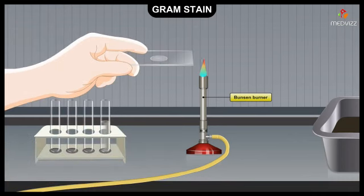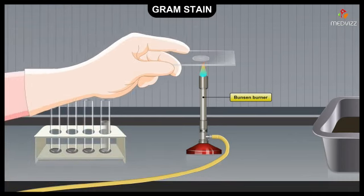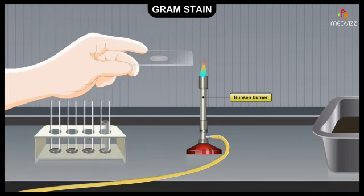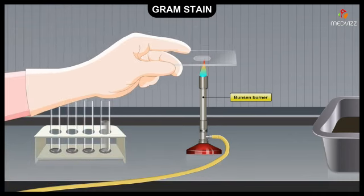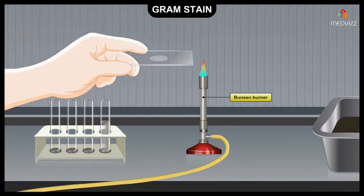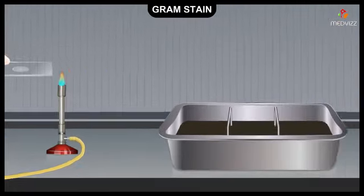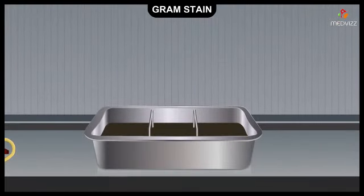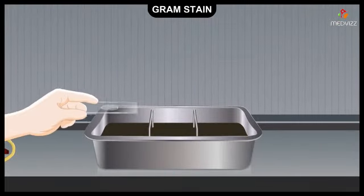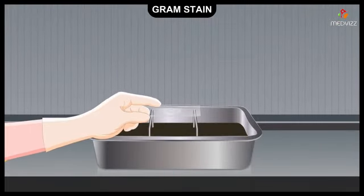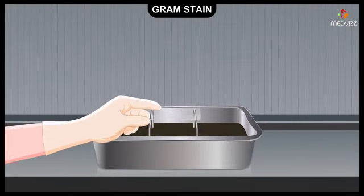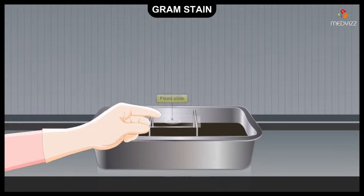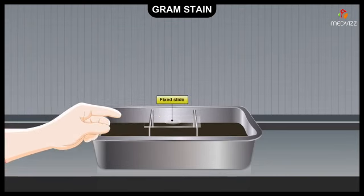The cells are then fixed to the slide by passing it slightly above the flame of a Bunsen burner. After passing above the flame, the slide should feel warm when touched to the back of the hand, but should not be too hot.